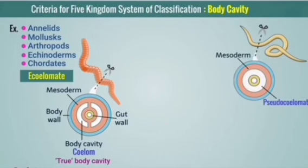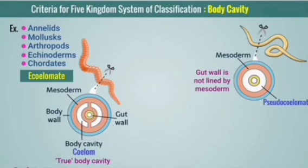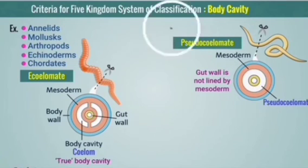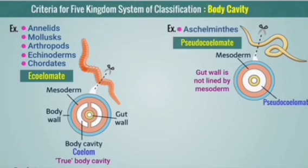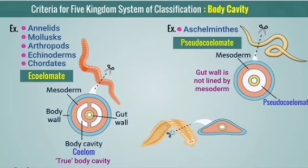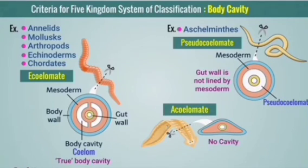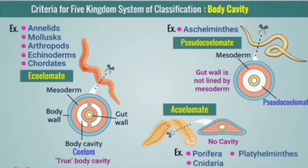In pseudocoelomate animals, the body cavity is present but not lined by mesodermal cells, so it is called a pseudocoelom — 'pseudo' means false and 'coelom' means body cavity. They have a false body cavity; an example is Ascaris. In acoelomate animals, there is no body cavity at all. Examples are Porifera, Cnidaria, and Platyhelminthes.